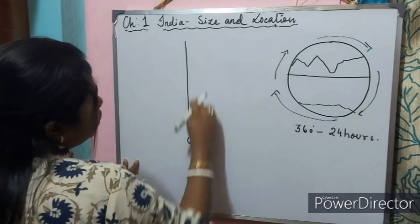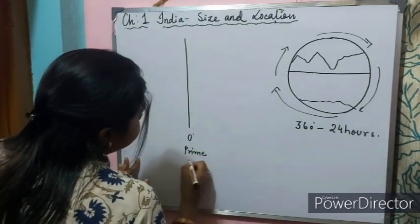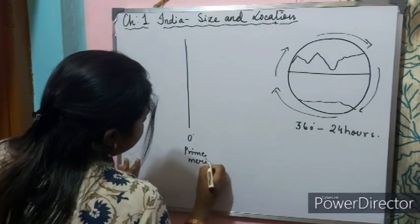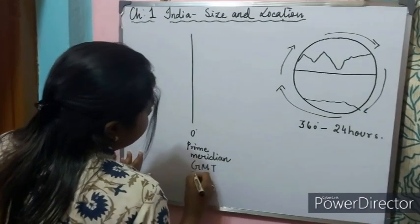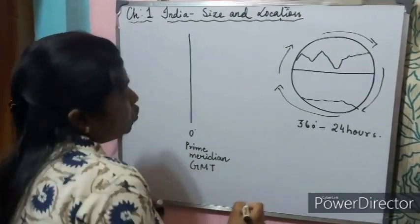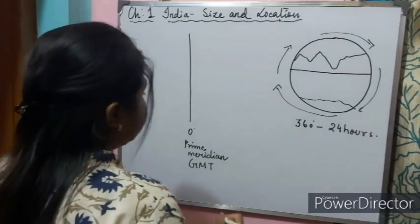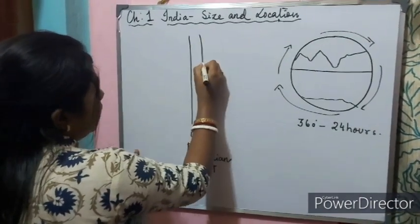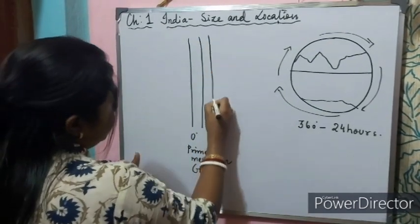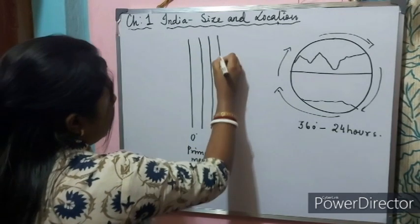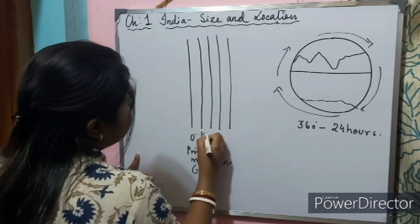Zero degree is the prime meridian, also called GMT — Greenwich Mean Time — which passes through the Greenwich Royal Observatory in London.